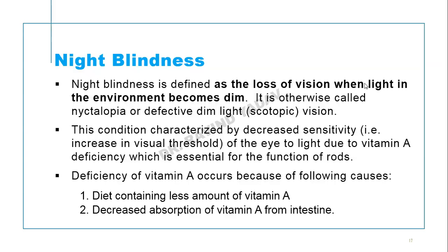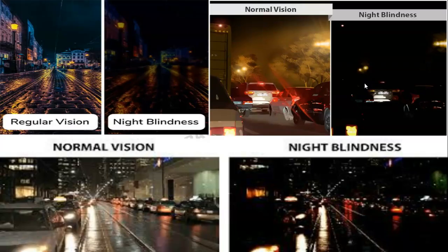Night blindness involves a loss of vision when light in the environment becomes dim. It is otherwise called nyctalopia, or defective dim light and scotopic vision. It is caused by Vitamin A deficiency, which hampers the function of rods. The deficiency can be due to consuming a diet with low Vitamin A concentration, or due to decreased absorption of Vitamin A in the intestine.